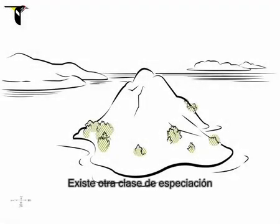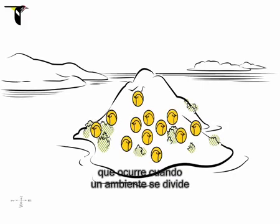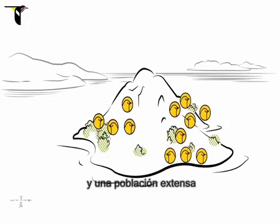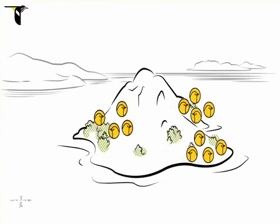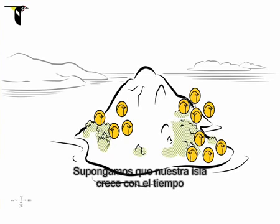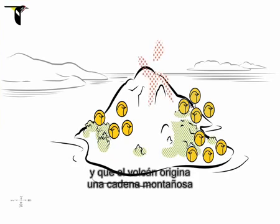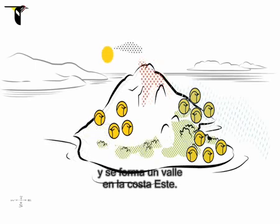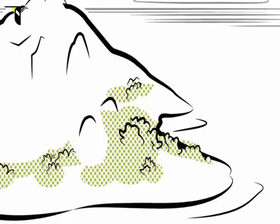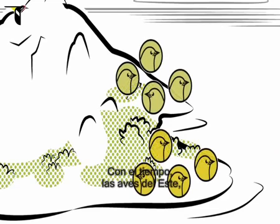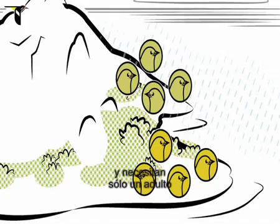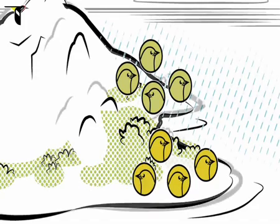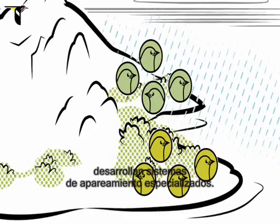But there is another kind of speciation that can occur when a habitat becomes divided and a once widespread bird population becomes fragmented. Imagine that our new island grows larger over time and the volcano develops a central mountain ridge while a valley forms along the eastern coast. Over time, the eastern birds, who have plentiful fruit resources and only need a single parent to successfully raise young, evolve specialized mating systems.